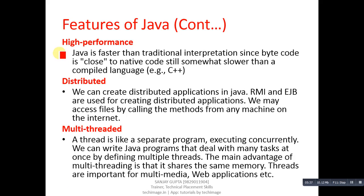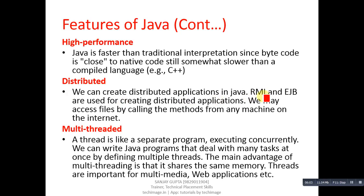High performance: Java is faster than traditional interpretation since bytecode is close to native code, though still somewhat slower than a compiled language like C++. Distributed: we can create distributed applications in Java. RMI and EJB are used for creating distributed applications, which are part of advanced Java. We may access files by calling methods from any machine on the internet.